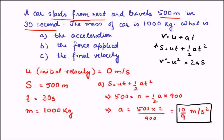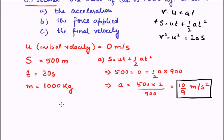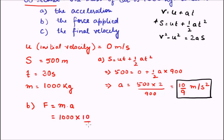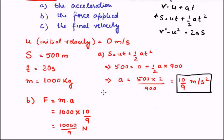For part B we need the force. We know that force equals mass into acceleration. Mass from the question is 1000 kg, and we just found acceleration to be 10/9 meters per second squared. So force equals 1000 into 10/9, which equals 10,000 over 9 Newtons. Newton is the SI unit of force.